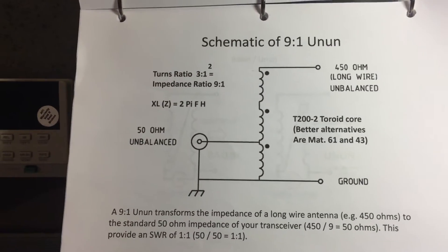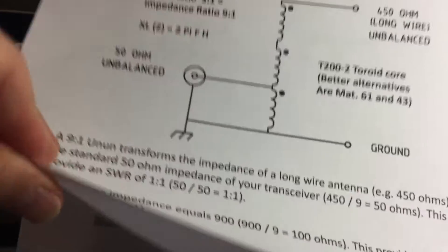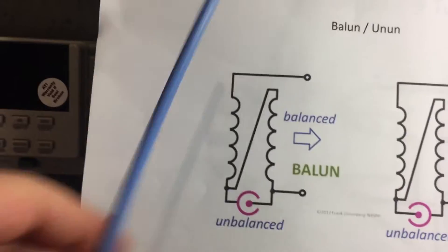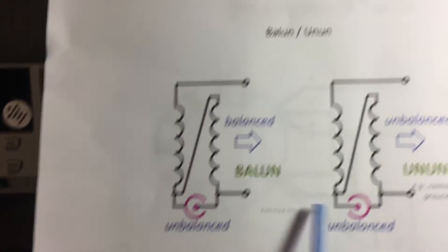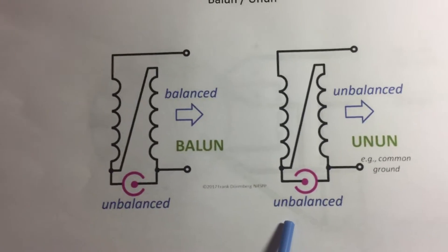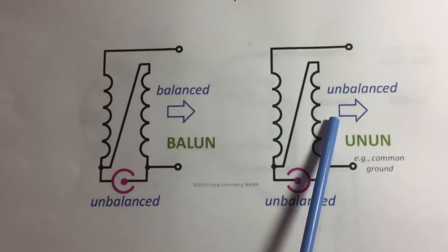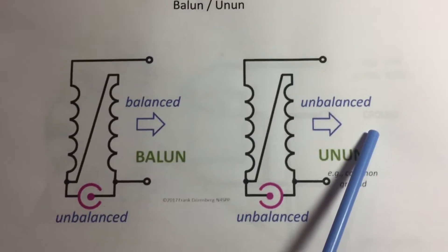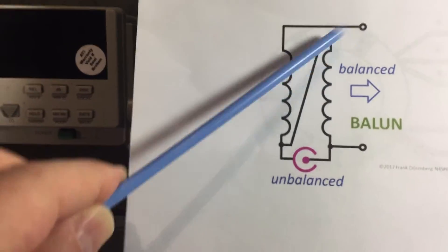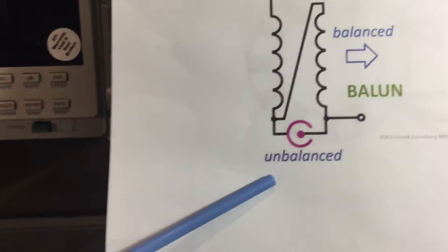And we're actually going to look at these different materials on the nano VNA and take a look at how they respond over frequency, over the high frequency band. So that's basically the schematic that takes care of the impedance transformation from 450 ohms to 50 ohms. And this is just a little bit of clarification. When we talk about the impedance, ununs, we go from unbalanced to unbalanced. So the output from your transceiver is unbalanced. If we're using an end-fed antenna, we're going to use unbalanced to unbalanced.